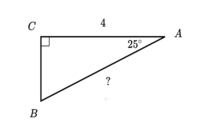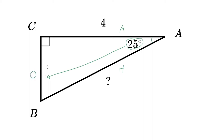Let's move on to the next problem. We're given another problem where we need to solve for the length of side BA. We've got a 25 degree angle at angle CAB. Let's label the triangle: this is going to be our hypotenuse, we've got adjacent over here, and drawing a line gives us our opposite side.